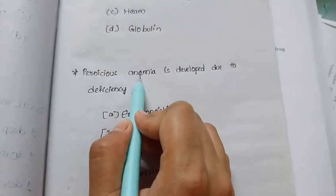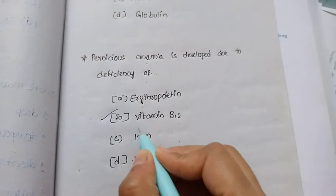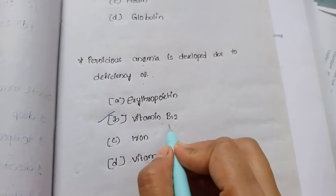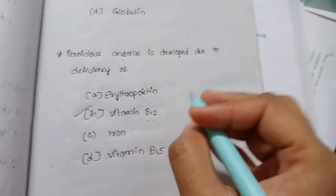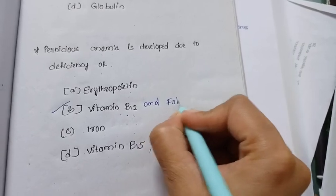Pernicious anemia is a deficiency. That is option B, vitamin B12. Vitamin B12 deficiency.